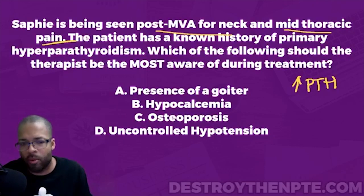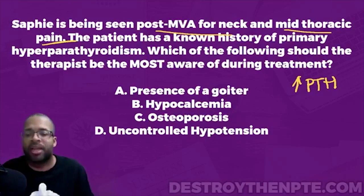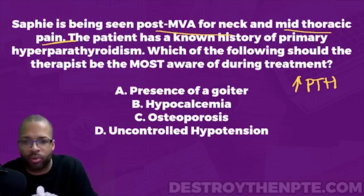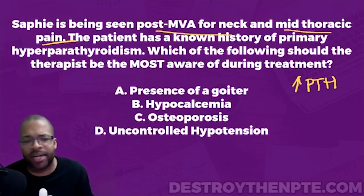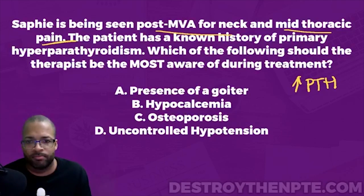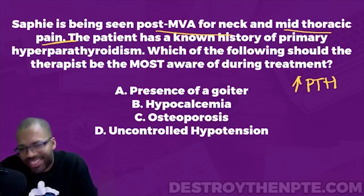Parathyroid hormone is responsible for stimulating - indirectly - osteoclastic activity. Remember what osteoclasts do? They break down the bone; they cause reabsorption of bone and reabsorption of calcium. When the osteoclasts break down the bone, that releases calcium into the bloodstream. So parathyroid hormone is responsible for increasing the amount of calcium in the blood - that's its job.